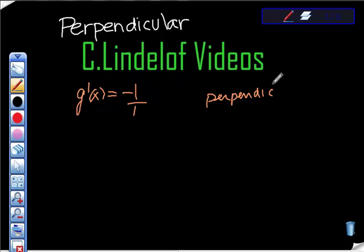It's negative 1 over 1. So the opposite reciprocal of that would be 1 over 1, not negative but positive. So the slope we're looking for is a slope of 1.